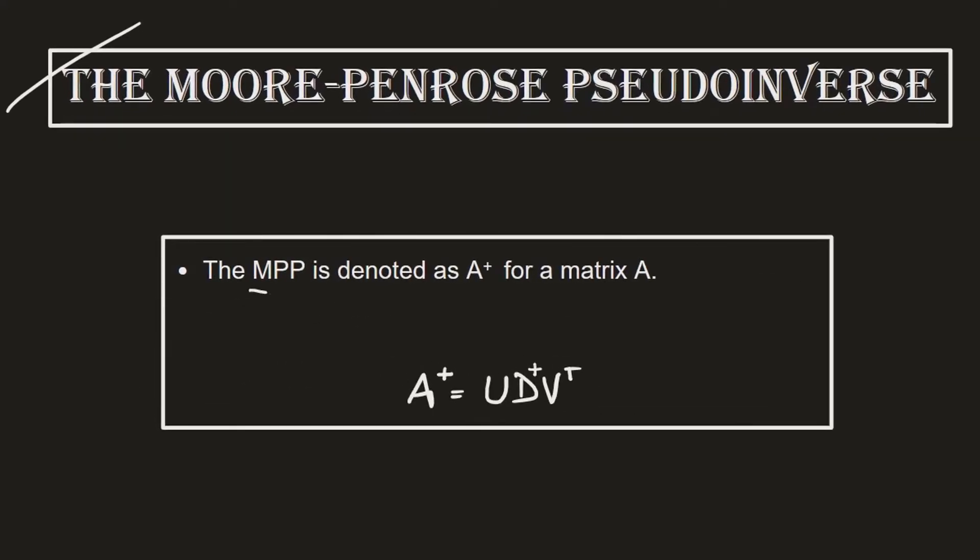So the Moore-Penrose pseudoinverse for a matrix A is denoted as A superscript plus and it can be broken down into these three components. If you have been following the lectures on eigen decomposition and singular value decomposition then you must be already familiar with these elements.